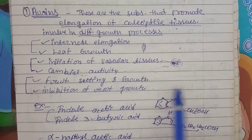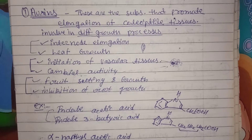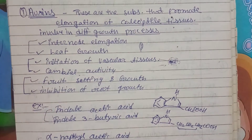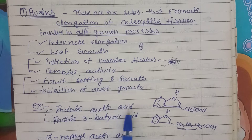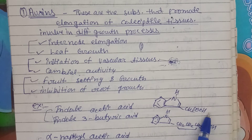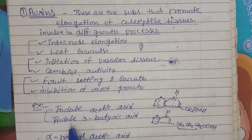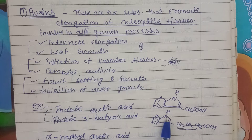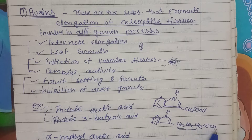So these are the functions of auxin in plants. What are the different examples? The first one is indole acetic acid. You can see here a six-membered benzene ring with a five-membered ring with NH, and it is involved — CH₂COOH is attached. If you remember this structure, you will be able to write about indole-3-butyric acid also. Here again, benzene ring with five-membered ring NH is there; you have to add CH₂CH₂ before CH₂COOH.